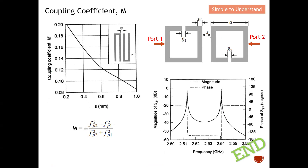For example, with a gap s = 3 mm, we calculate m = 0.01084. Then we shift the gap closer, say to s = 1 mm, run the simulation again, read the new fp1 and fp2 peaks, and compute the new m. Then we shift to s = 0.8 mm and repeat. By varying the gap s across multiple values, we obtain enough data points to plot the coupling coefficient m versus gap spacing s for the hairpin line bandpass filter.